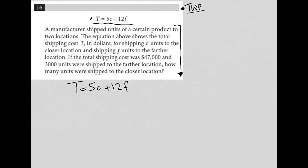So let's start reading. The question says a manufacturer shipped units of a certain product to two locations. The equation above shows the total shipping cost T. Okay, so T is cost. I'll just make a little note there above T. In dollars for shipping C units to the closer location. So this has to do with units, closer or close. And shipping F units to the farther location. So this is also units, but it's to the farther of the two locations.